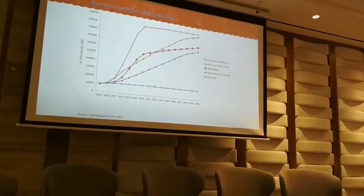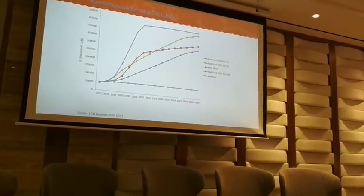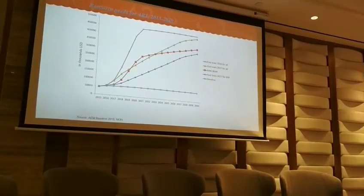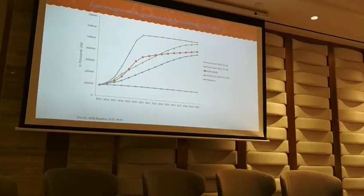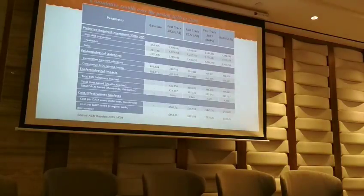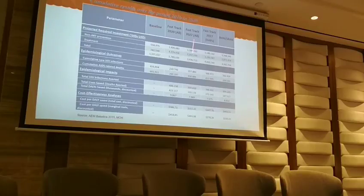This shows the resource needs for ART funding. If we want to implement the fast-track scenario by 2027, we need substantial funding for ART as well as for prevention. This slide shows the total resource needs for both prevention and treatment, and the specific funding amounts required for the 2027 fast-track scenario.